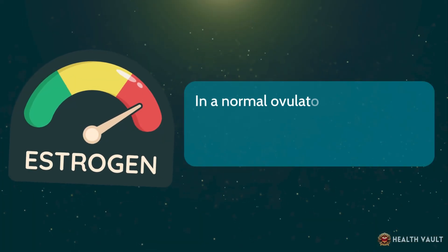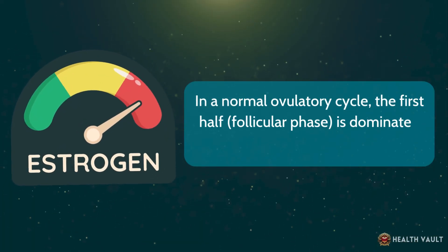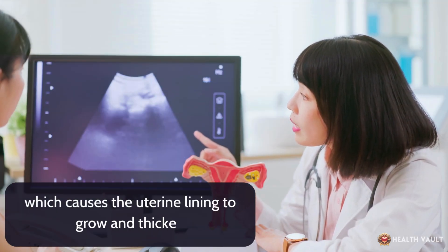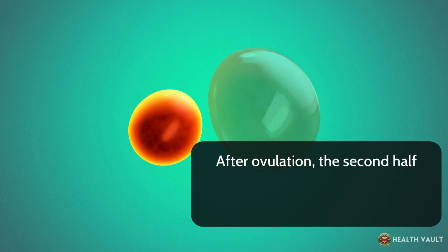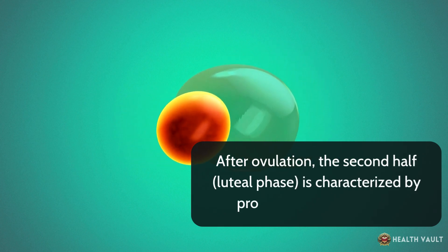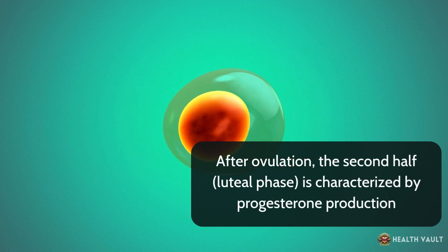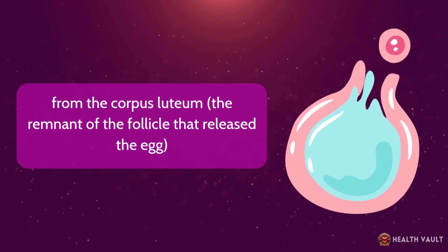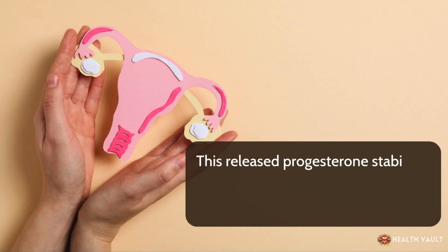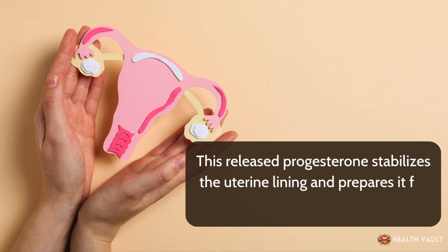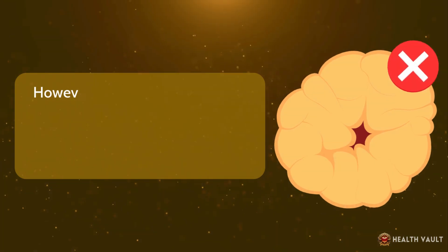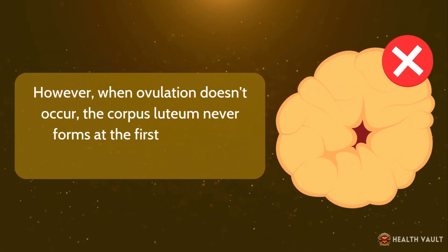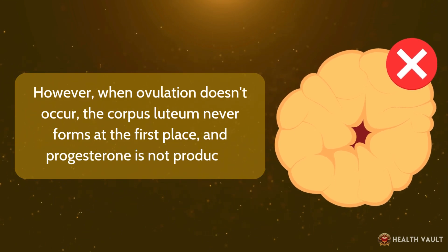In a normal ovulatory cycle, the first half, or follicular phase, is dominated by estrogen, which causes the uterine lining to grow and thicken. After ovulation, the second half, or luteal phase, is characterized by progesterone production from the corpus luteum, which is the remnant of the follicle that released the egg. This progesterone stabilizes the uterine lining and prepares it for potential implantation. However, when ovulation doesn't occur, the corpus luteum never forms and progesterone is not produced.